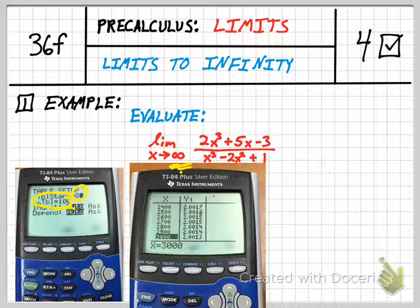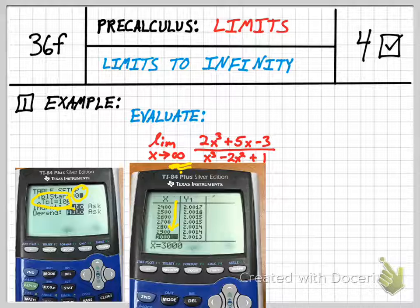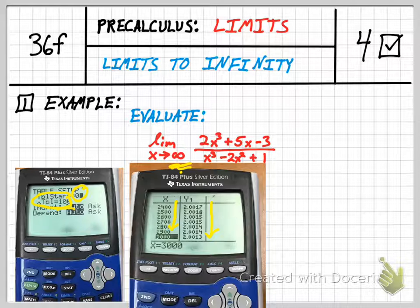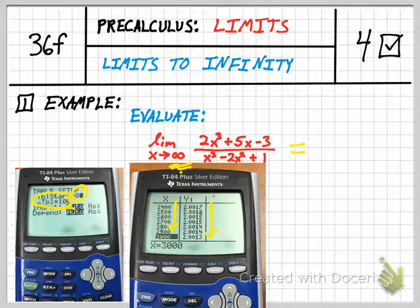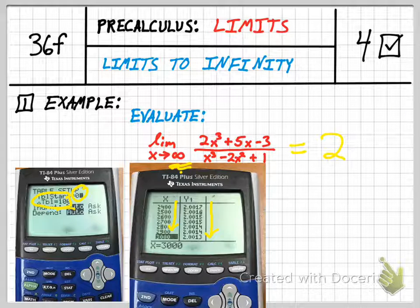Alright, and then you have your table. And you basically want to just scroll down until you're pretty confident that you're getting sufficiently large to tell what the pattern is in the y values. If you're not sure, you can just keep scrolling down, or plug in larger and larger numbers. But what ends up happening is this is equal to 2.